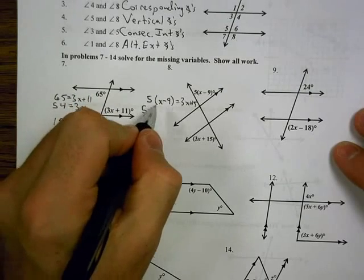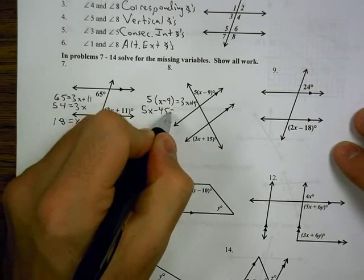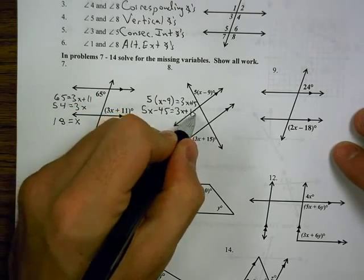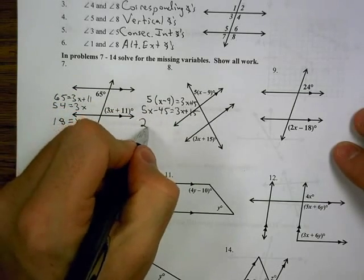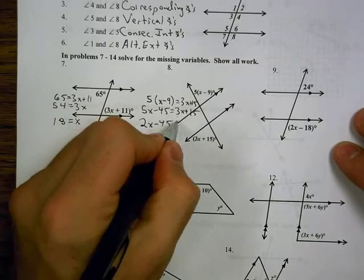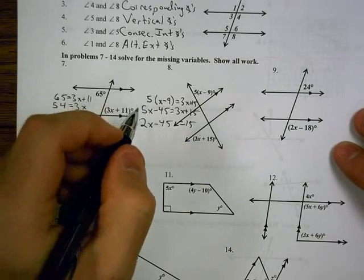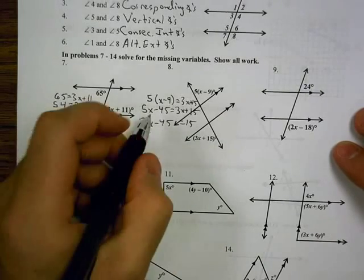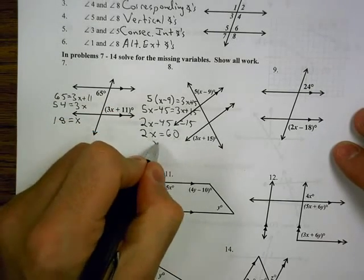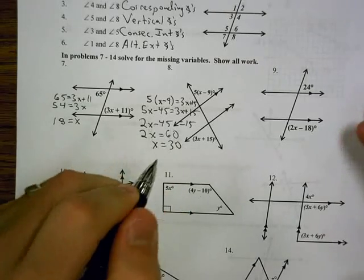I'm going to distribute the 5, so 5x minus 45 equals 3x plus 15. I can subtract 3x from both sides, gives me 2x minus 45 equals 15. I add 45 to both sides, I get 2x equals 60, so x is 30.